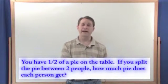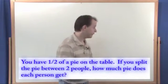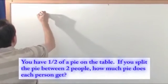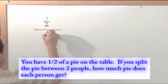So what you're doing is you're taking that one half of a pie and dividing it by two, and so that's what we're going to do and we're going to write it down exactly like this. You have one half of a pie and you are dividing it by two.